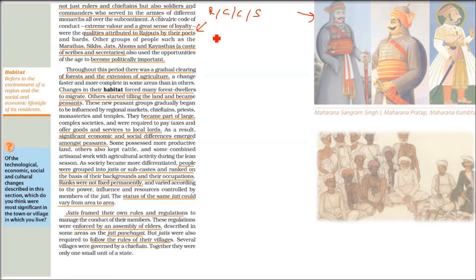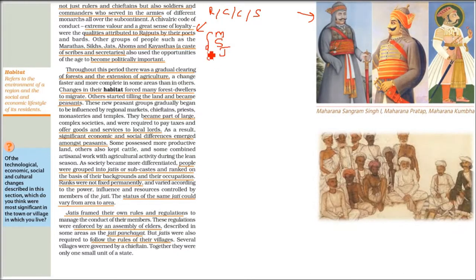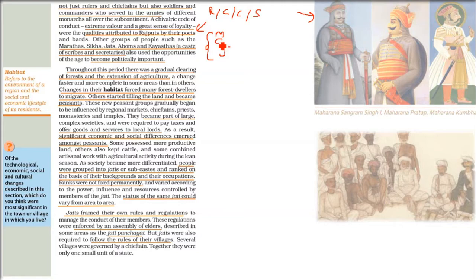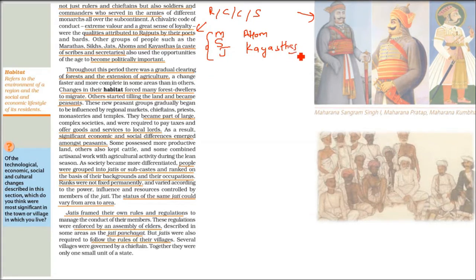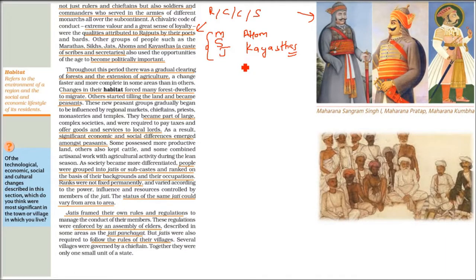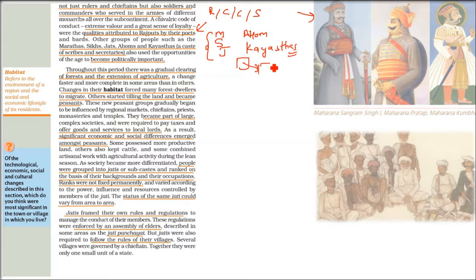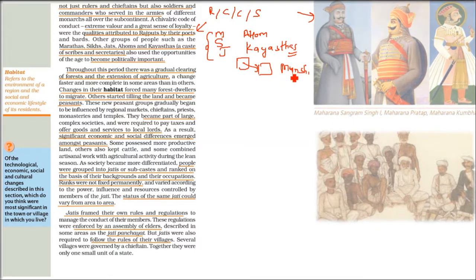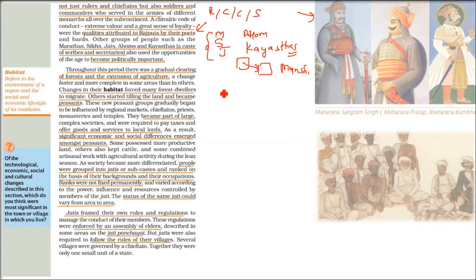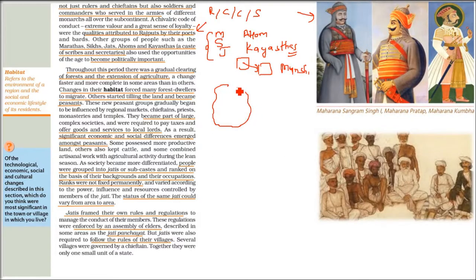At this time we have Marathas, Sikhs, and Jhats. In our Indian army we have Maratha regiment, Sikh regiment, and Jhat regiment because they were powerful fighters. Along with this, Ahoms and Kayasthas - these Kayasthas were basically scribes doing writing work and also Munshis or secretaries, like Shrivastavs and Porwals. They were doing writing work, secretarial work, or looking after accounts, billing, and taxes. All these people became politically important.